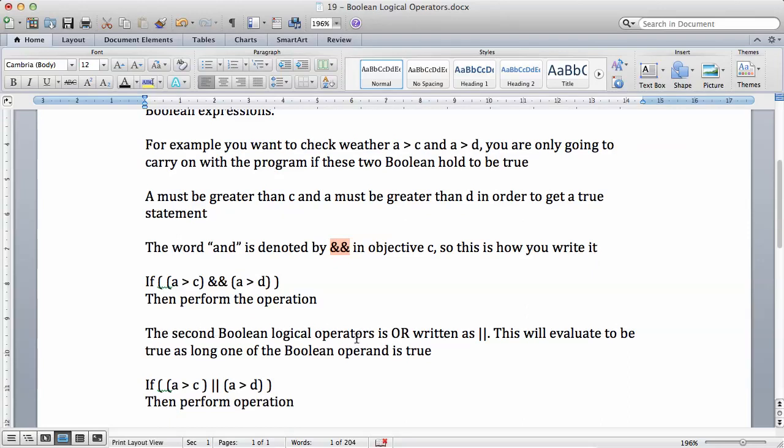The second Boolean logical operator is OR, which is written as two vertical bars. You find this on your keyboard. This will evaluate to be true as long as one of the operand is true. So let me give an example.